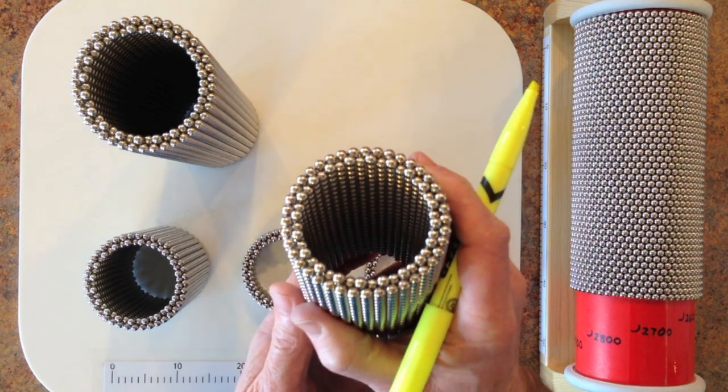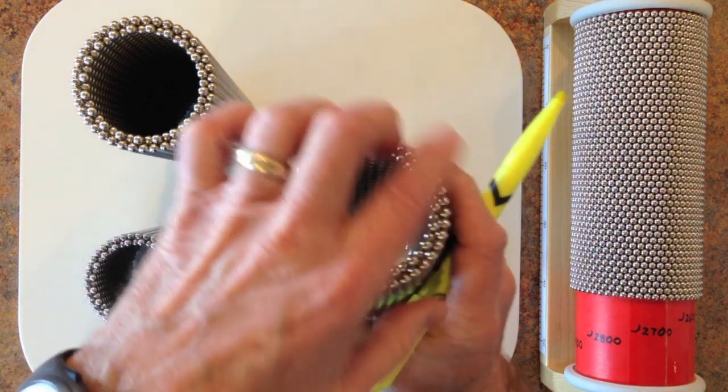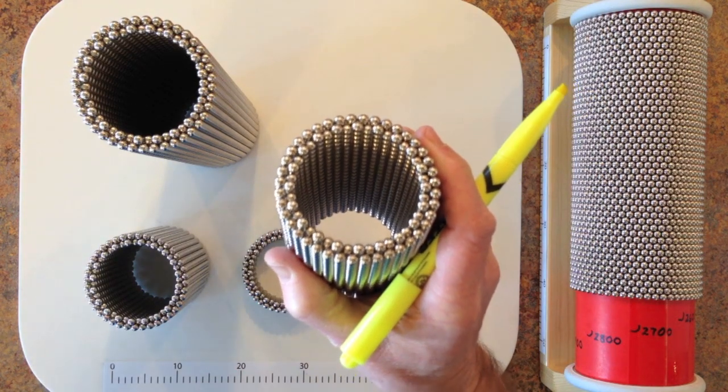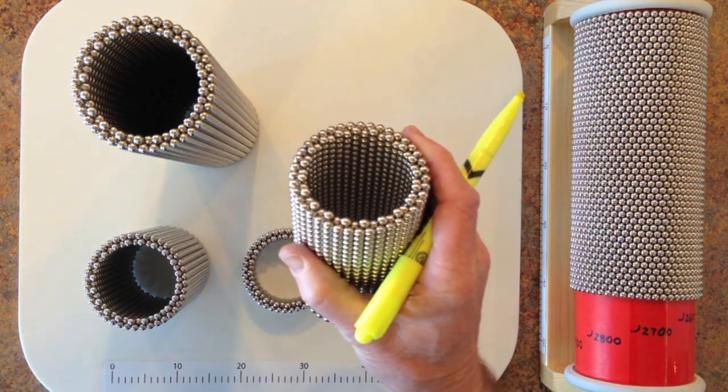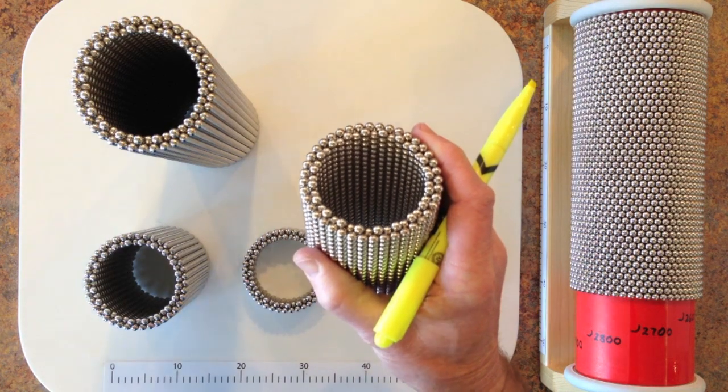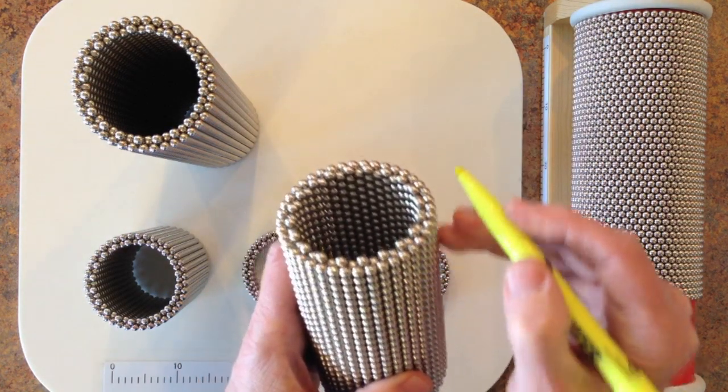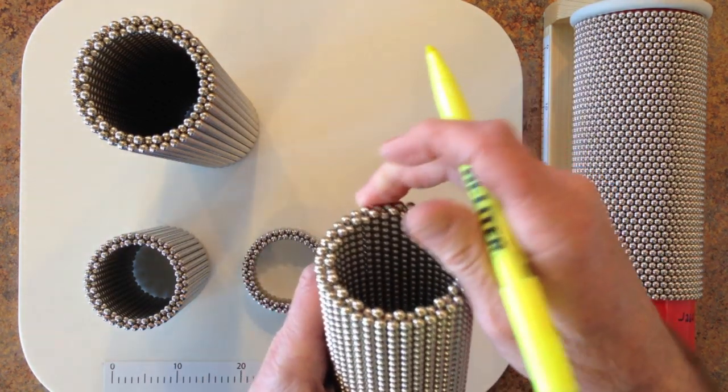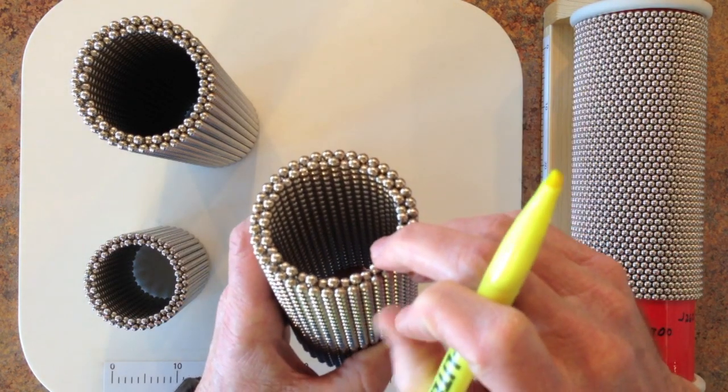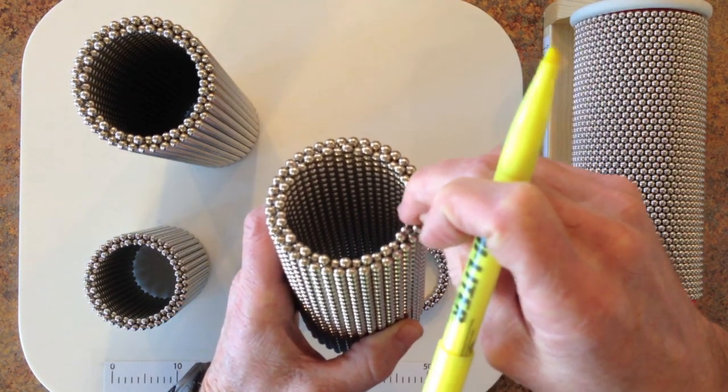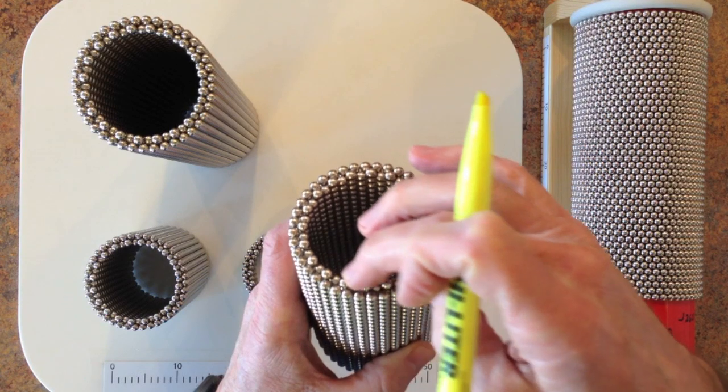As shown in the written description below, 40 column cylinders best match this natural curvature. Each ring in the tube requires 80 magnets: 40 for the outer wall and 40 for the zigzag ring on the inner wall.